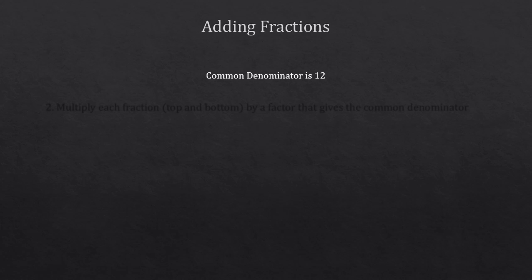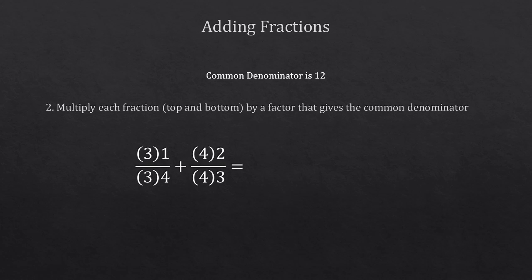And now it's time to multiply each fraction, the top and the bottom, by a factor that gives the common denominator. So, to get 12 on the bottom, we need to multiply 4 by 3. So, we'll also need to multiply the numerator 1 by 3. That gives us 3 over 12.